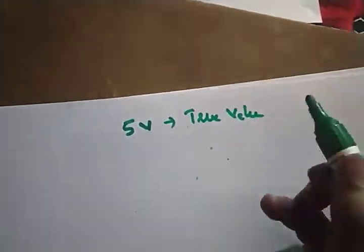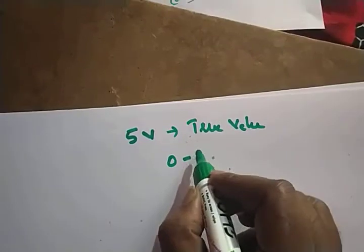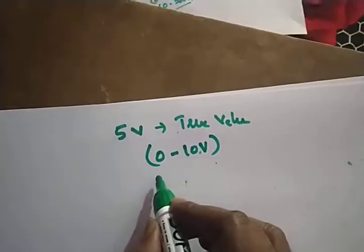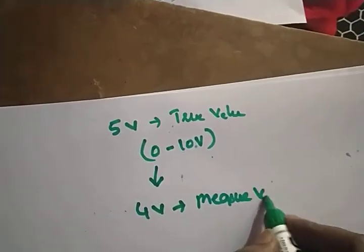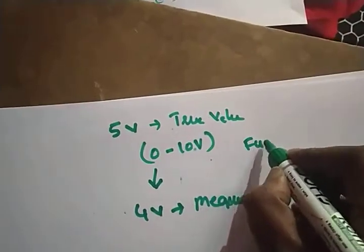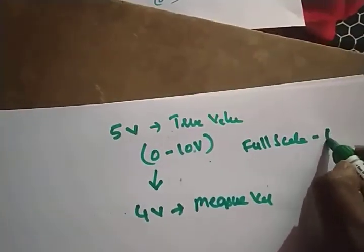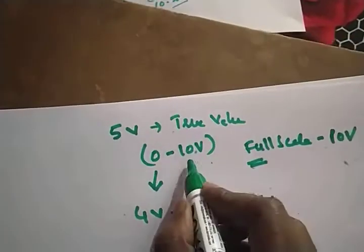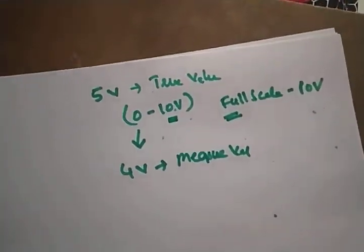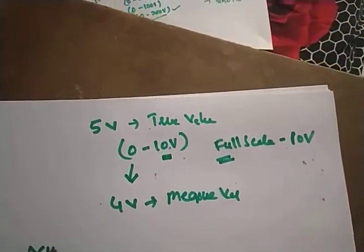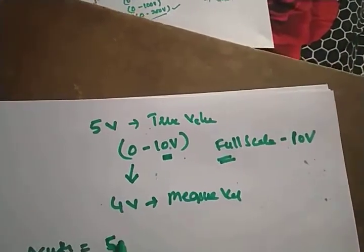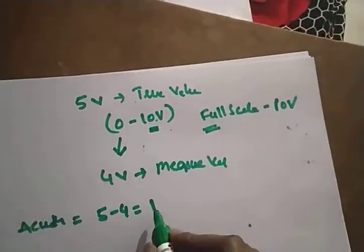Suppose I want to measure 5 volts — that is my true value. I have a 0-to-10 volt instrument and I get a measured value of 4 volts. The full scale is 10 volts — that is the maximum scale. What is the accuracy? Accuracy means deviation: 5 minus 4 equals 1, so there is 1% error.